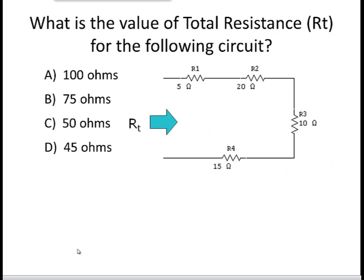Let's do a quick check to make sure that you've grasped this concept of total resistance. Calculate the total resistance in this circuit before you go on to the next slide. If you don't get 50 ohms, you should recalculate the values again. And if you still don't get 50 ohms, go back a couple of slides and review the theory on total resistance.